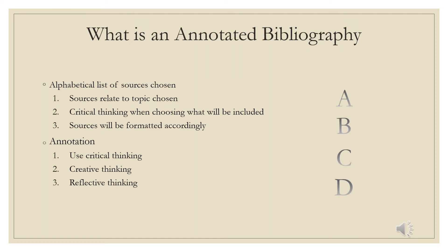What is an annotated bibliography? An annotated bibliography is an alphabetically ordered list of sources with a brief annotation under each. The sources chosen should be directly related to the topic the student has selected and can be books, ebooks, journals, articles, websites, documents, etc. Students should be selective and use critical thinking skills when choosing sources. Sources should be formatted according to what the professor has stated. Some examples of those formats include APA, MLA, and Chicago.